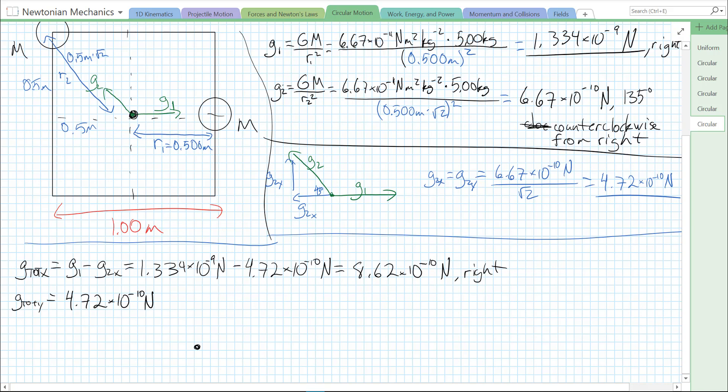To find our resultant, we just add our two vectors. This one points up, this one points to the right, so we have a rightward vector. That's 8.62 times 10 to the minus 10. An upward vector, that's 4.72 times 10 to the minus 10. And our resultant is the hypotenuse that connects the start to the end. That's going to be G total.